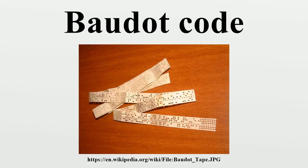Code elements 1, 2 and 3 are transmitted by keys 1, 2 and 3, and these are operated by the first three fingers of the right hand. Code elements 4 and 5 are transmitted by keys 4 and 5, and these are operated by the first two fingers of the left hand. Baudot's code became known as International Telegraph Alphabet No. 1, and is no longer used.